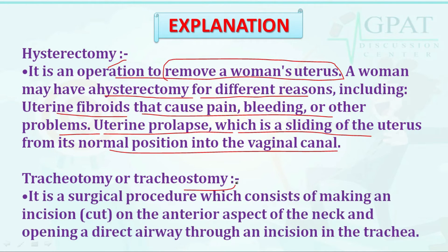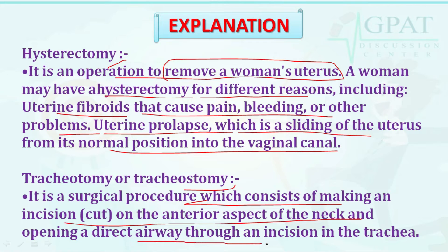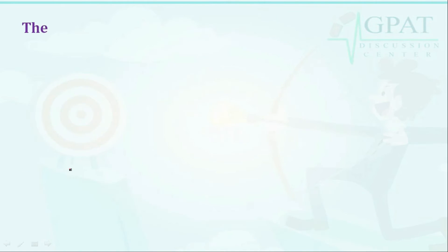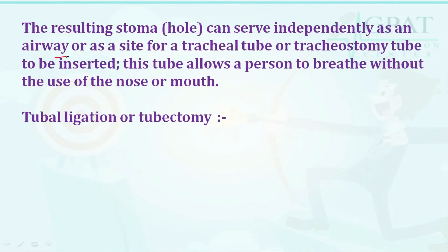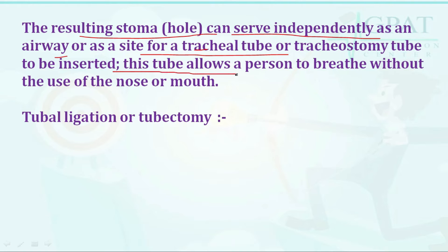Tracheotomy or tracheostomy is a surgical procedure which consists of making an incision on the anterior aspect of the neck and opening a direct airway through an incision in the trachea. The resulting stoma (hole) can serve as an airway or as a site for a tracheostomy tube, allowing a person to breathe without the use of the nose and mouth.